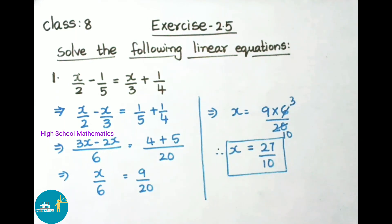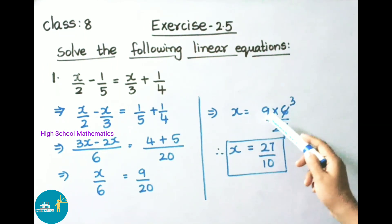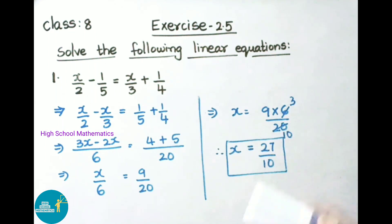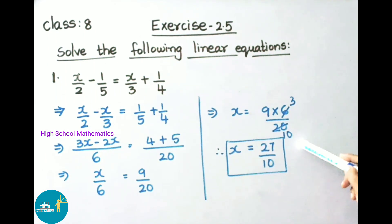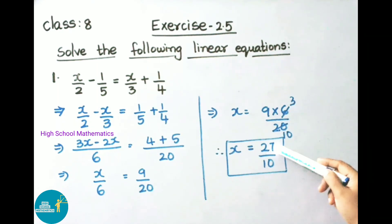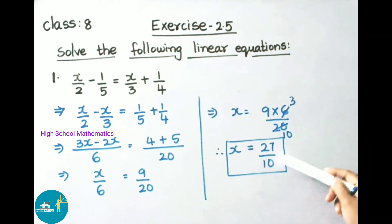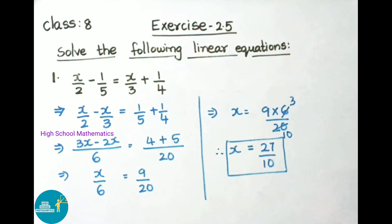That implies x equals 6 transposed to multiply, so x = 9 × 6 / 20. Simplifying: 9 × 6 = 54, divided by 20 gives 27/10. Therefore x = 27/10.